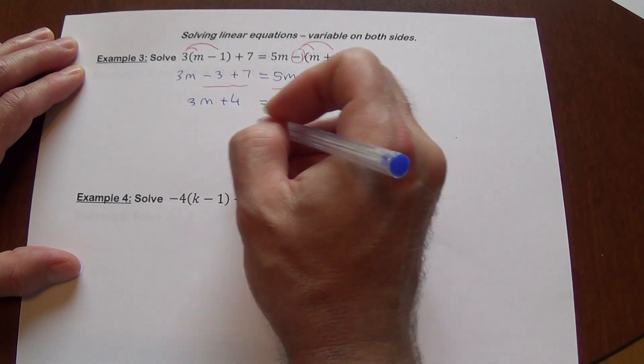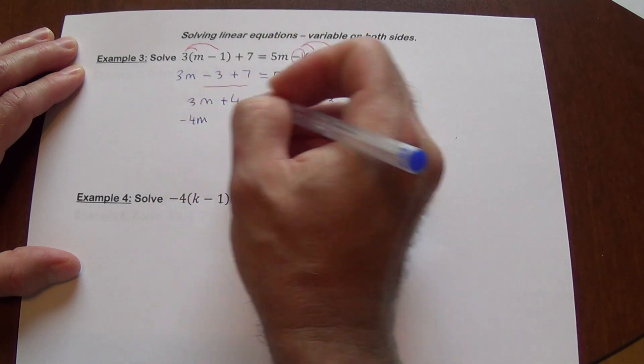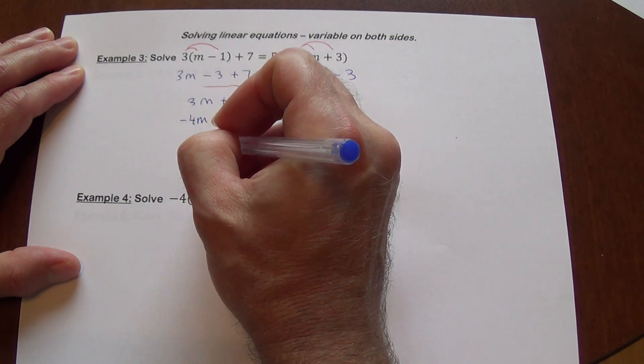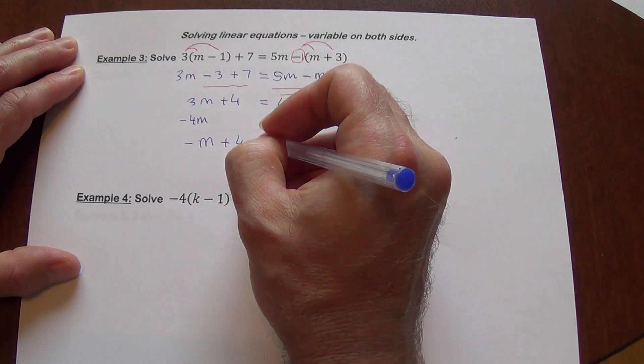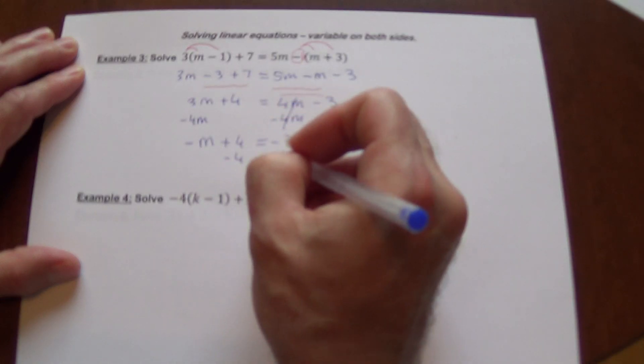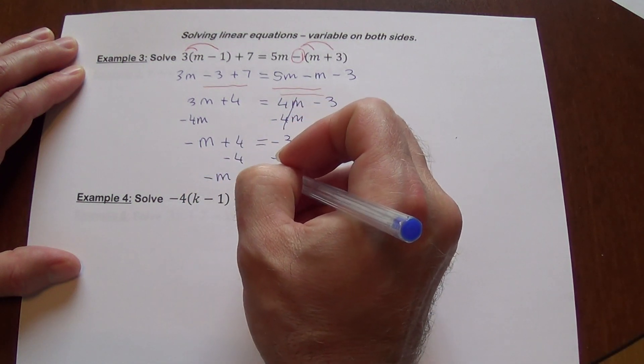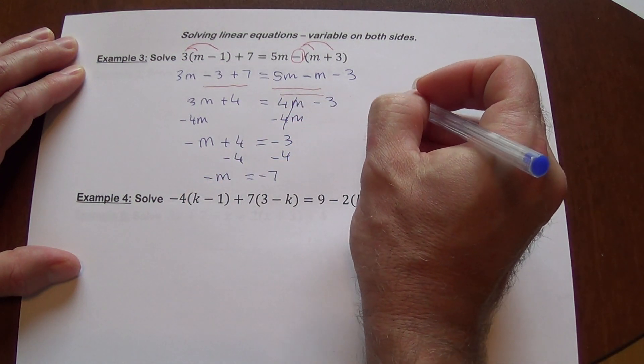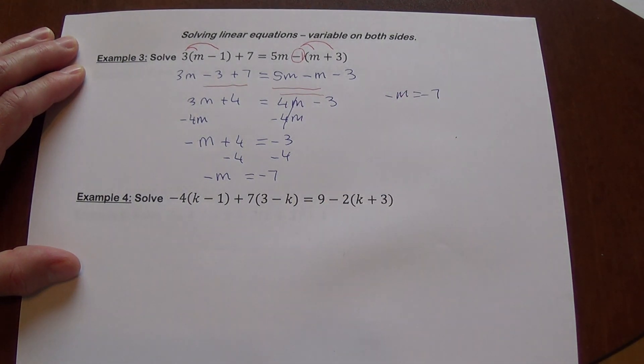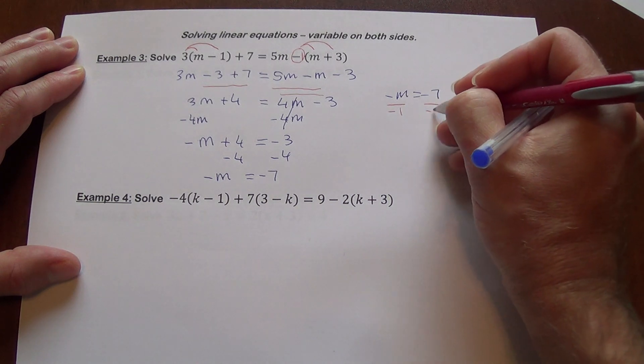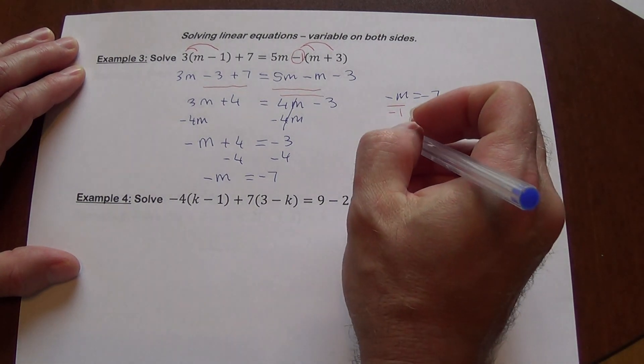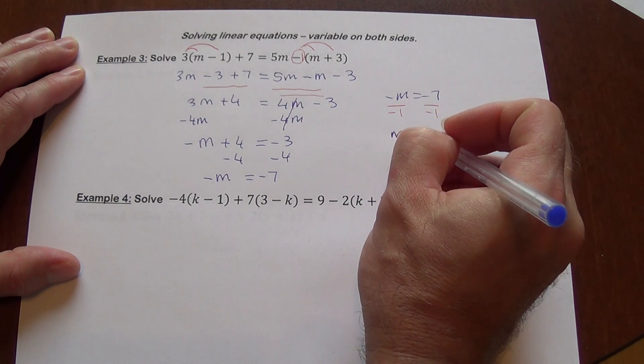We subtract 4m on both sides now. To cancel it on one side, we are going to get negative 1m or simply negative m plus 4 equals negative 3. Subtract 4, we have negative m equals negative 7. And what we typically do at this point, we divide by negative 1. Because remember, we need to get m by itself, not negative m. So m equals positive 7.